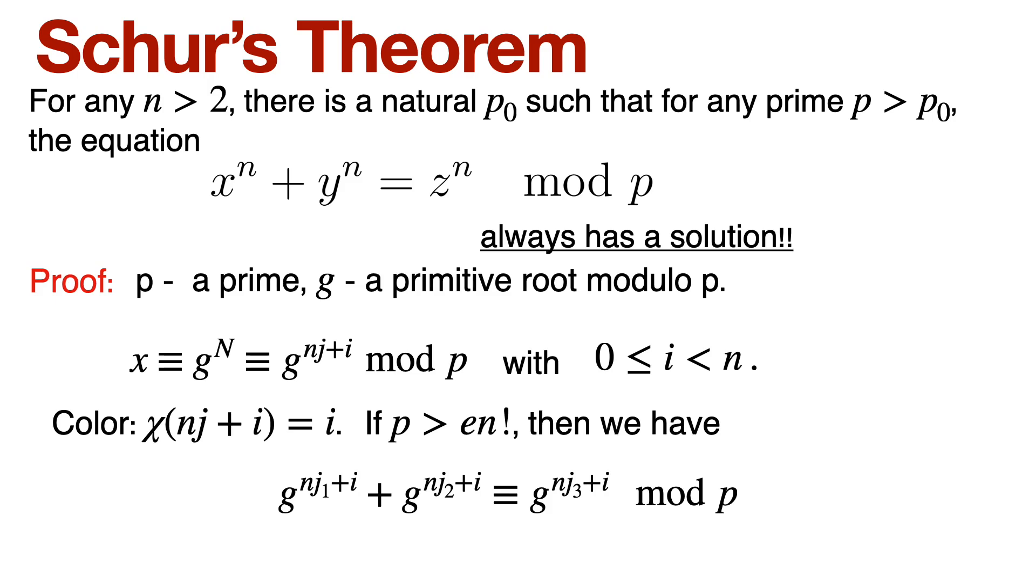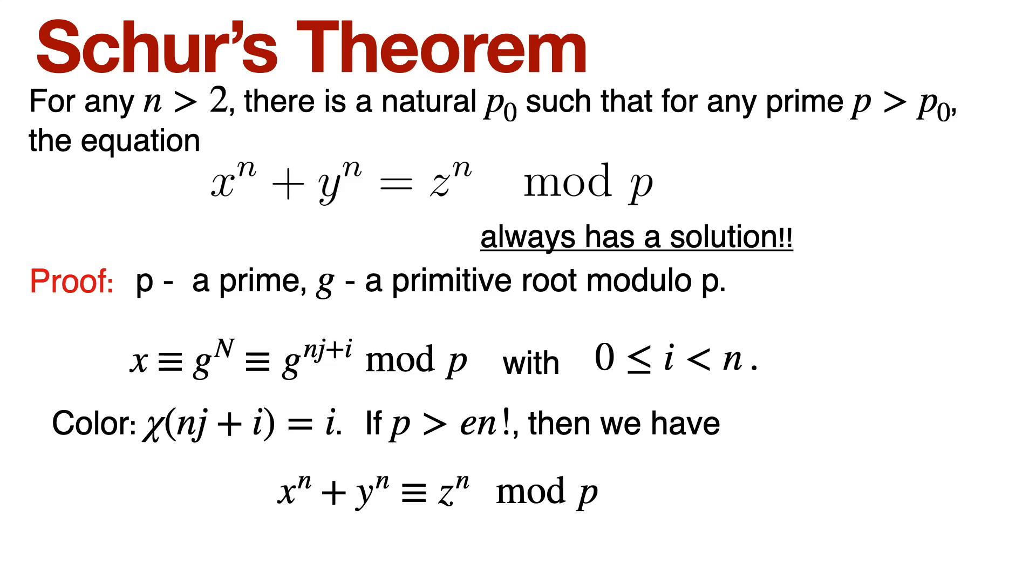But now we can just cancel off that g power i everywhere, simply because g power i is basically relatively prime to p, right? So we can actually cancel g power i everywhere, and we'll get g power n j1 plus g power n j2 is congruent to g power n j3 mod p. Wait a minute, this is g power j1 whole power n plus g power j2 whole power n is congruent to g power j3 whole power n mod p, which means we have a solution x power n plus y power n is congruent to z power n mod p, okay? So we have found a non-trivial solution and this marks the end of Schur's theorem.